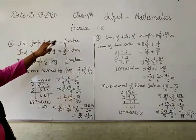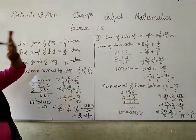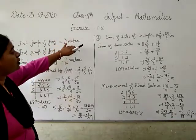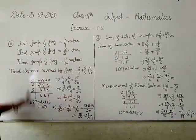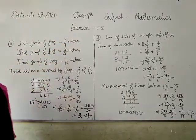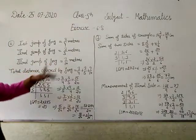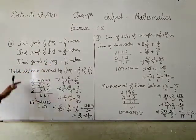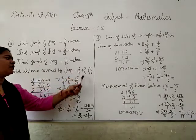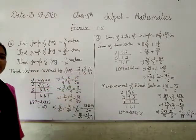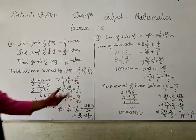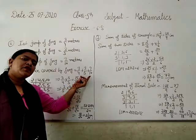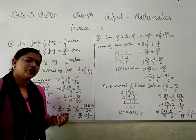You need to find the total distance covered. The first jump of frog was 3 by 4 meter, second jump 3 by 5 meter, and third jump 7 by 10 meter. Total distance covered by frog is 3 by 4 plus 3 by 5 plus 7 by 10. This question is sum of fractions, which you've done before.